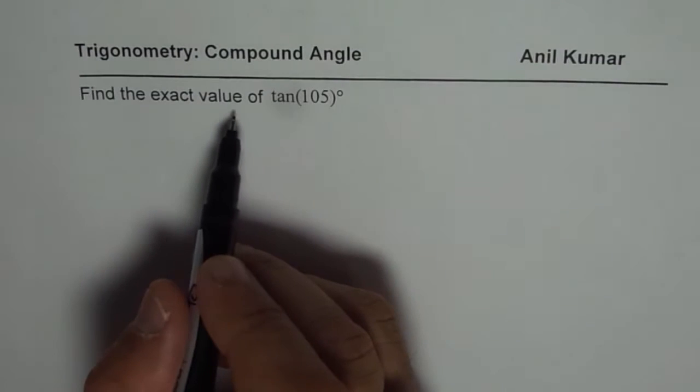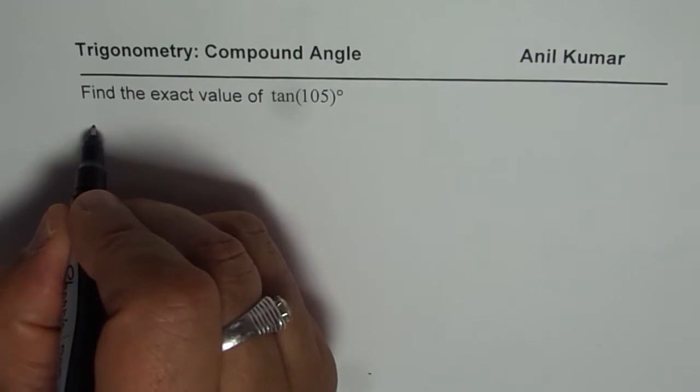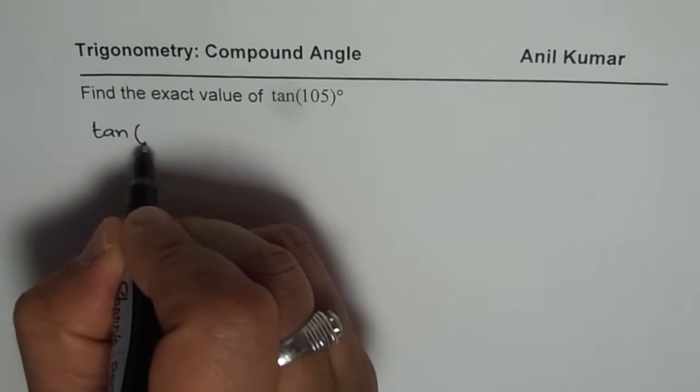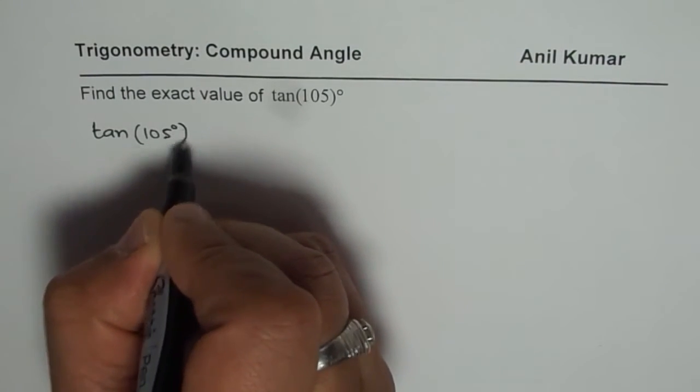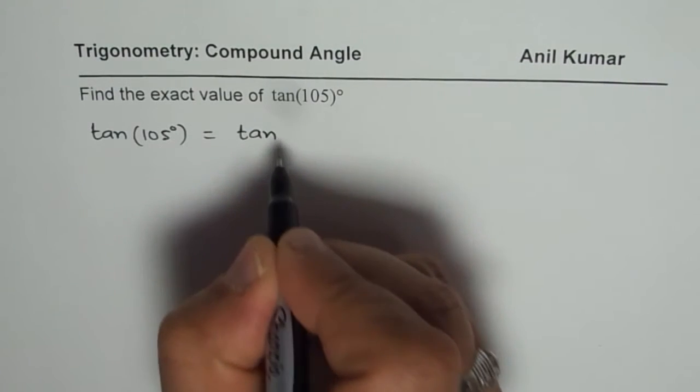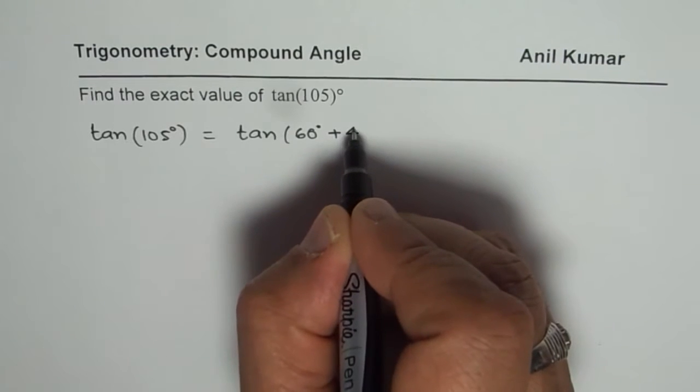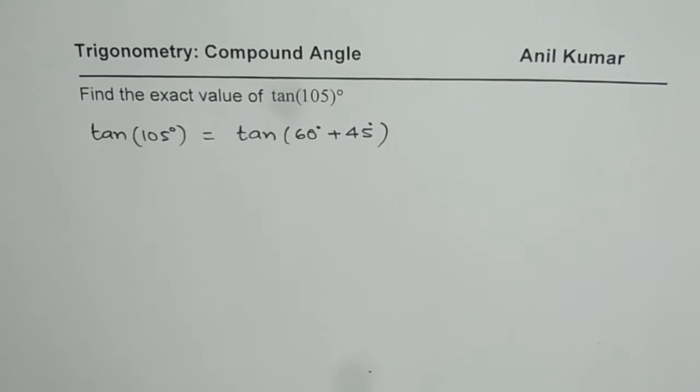So we need to find exact value of tan of 105 degrees. 105 could be written as 60 plus 45. So we could write this as 60 degrees plus 45 degrees.